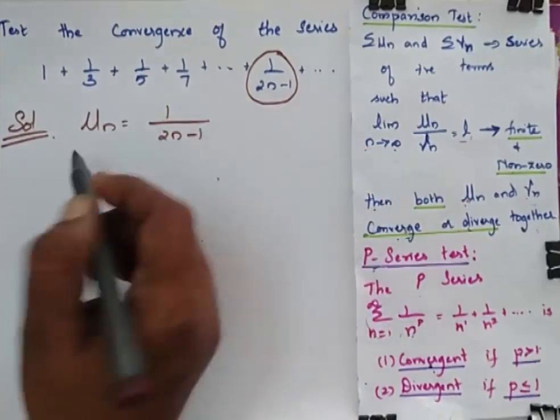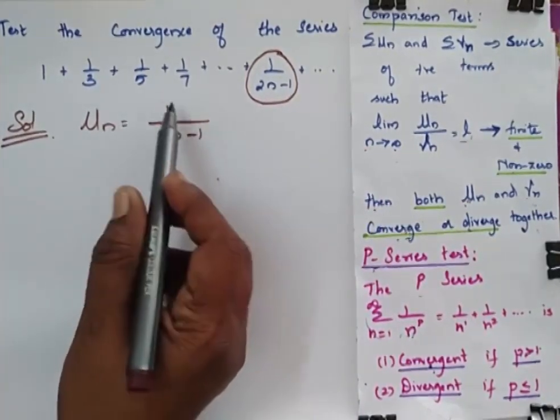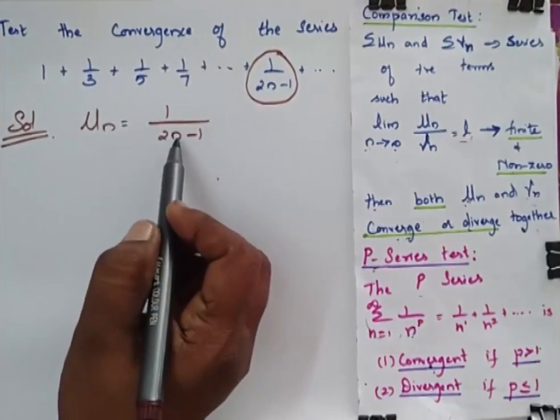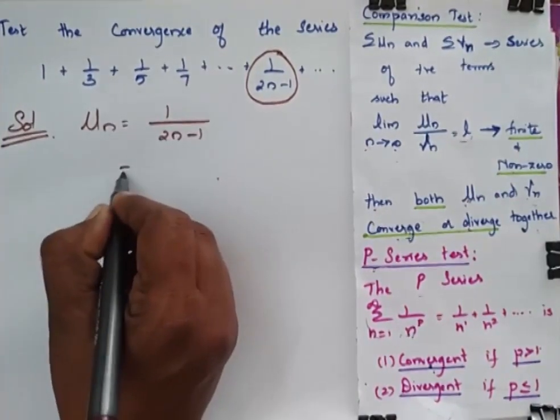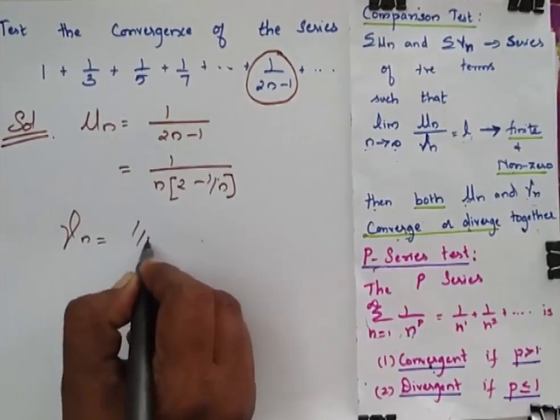This general term can be considered as Un. Un is equal to 1 by 2n minus 1. So in order to simplify this, I am going to take this n commonly outside. So now I am going to consider my Vn as 1 by n.